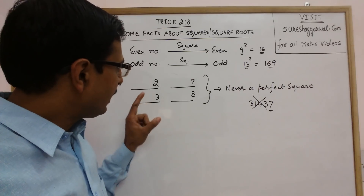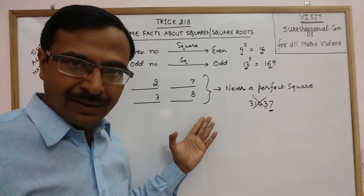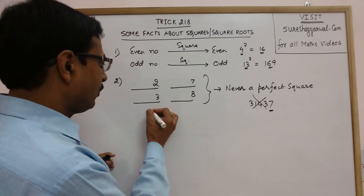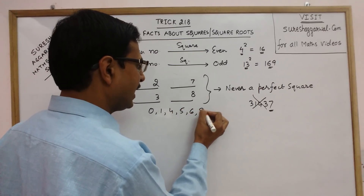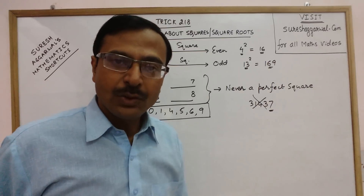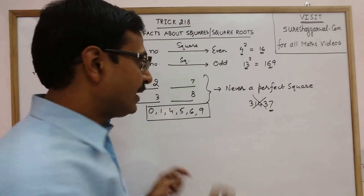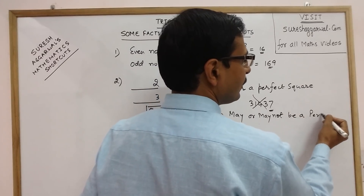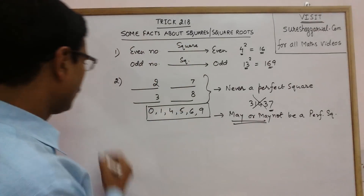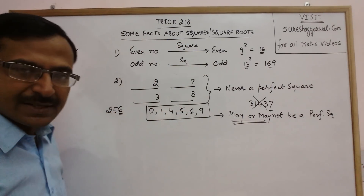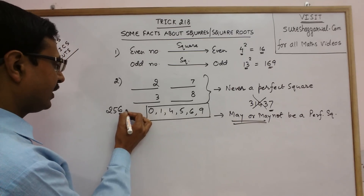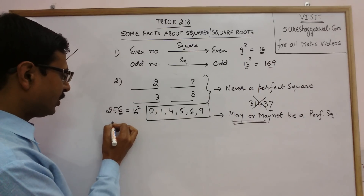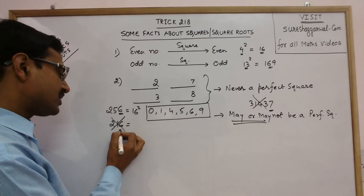It does not mean that containing a 0, 1, 4, 5, 6, or 9 in the unit's place will make the number a perfect square. If the unit's place contains one of these digits, then the number may or may not be a perfect square. For example, 256 contains 6 in the unit's place, so it may be a perfect square — and indeed it is 16 squared. But 216 is not a perfect square, yet it still contains 6 in the unit's place.